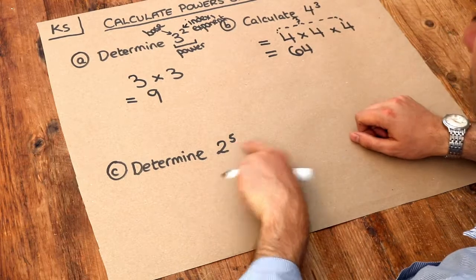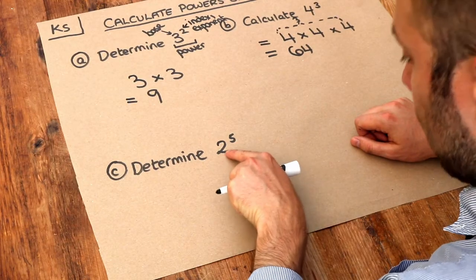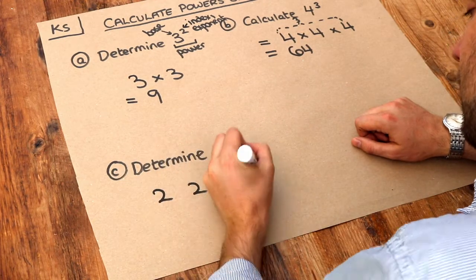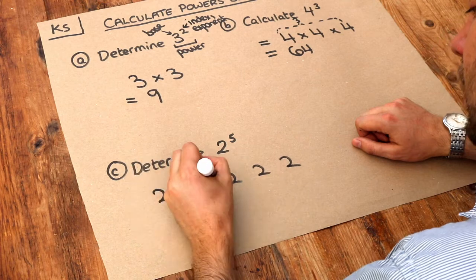Finally, we've got 2 to the power of 5. So we write out the number 2 five times. So 2 five times. And we multiply these together.